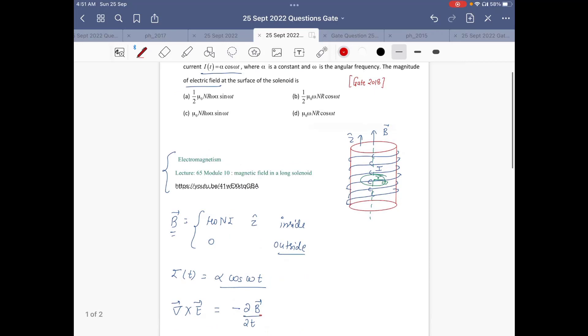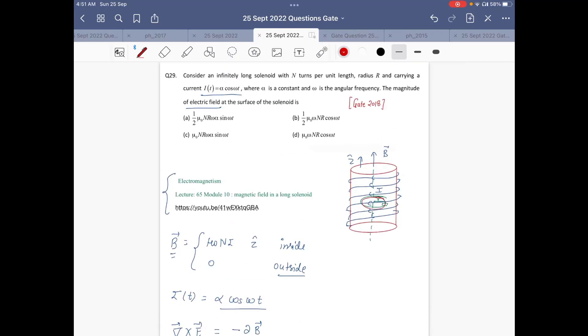So we have to take an Amperian loop inside this solenoid of radius small r. Basically we have to find what is the field, so we will increase our r to capital R when we are able to solve this equation.